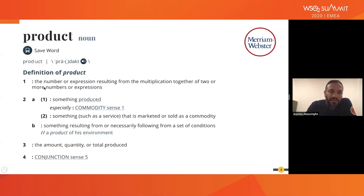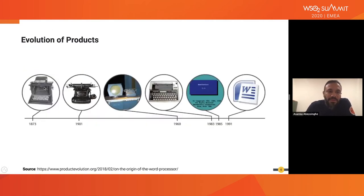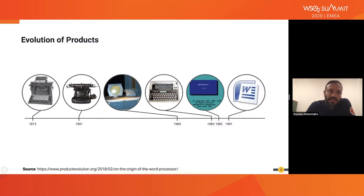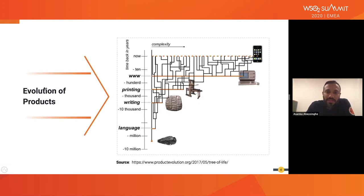To start with, I thought of giving an introduction about products. Everybody is familiar with the product concepts, but there are two ways: it can be a product that we consume, or it can be a service that we market or sell as a commodity. If you look at the product evolution, I took word processing as an example — it started with typewriters, then different software versions, then Microsoft Word, and now everything is cloud-based.